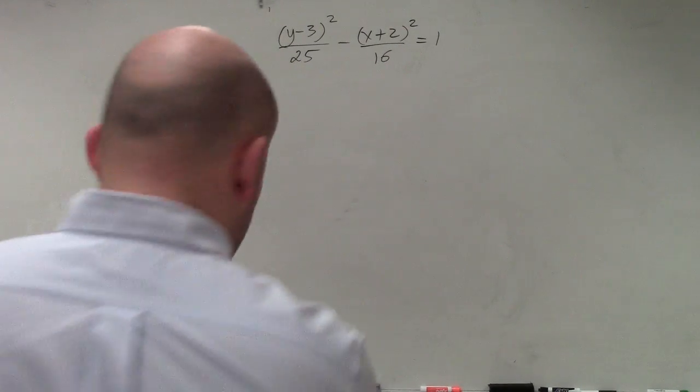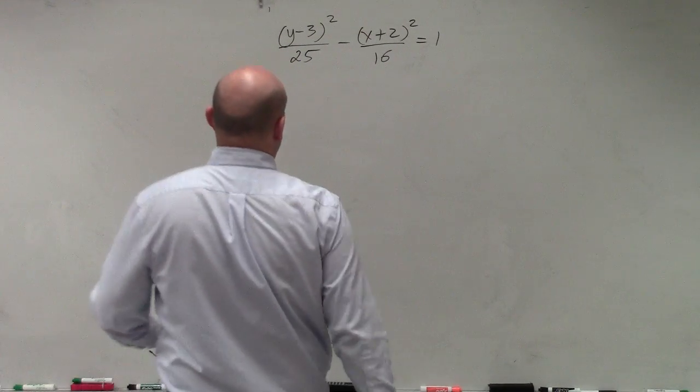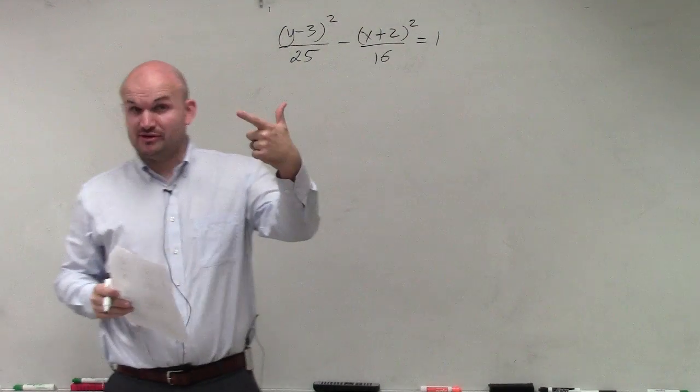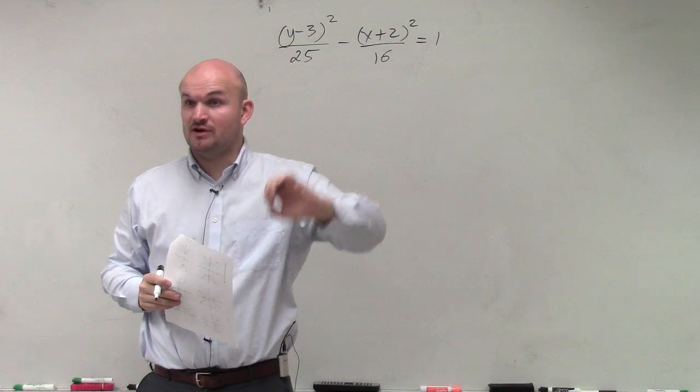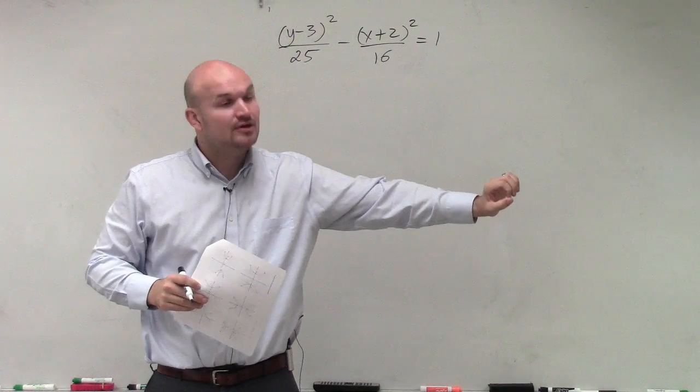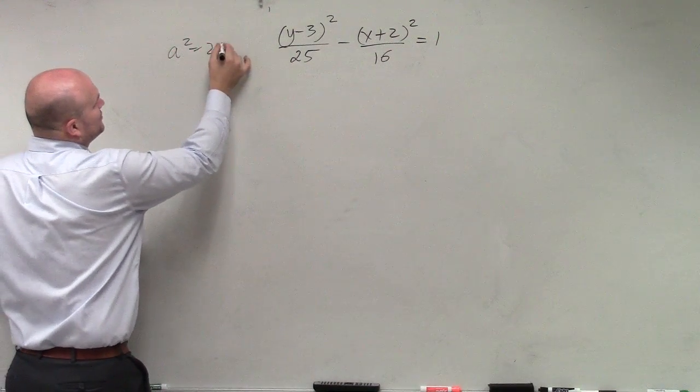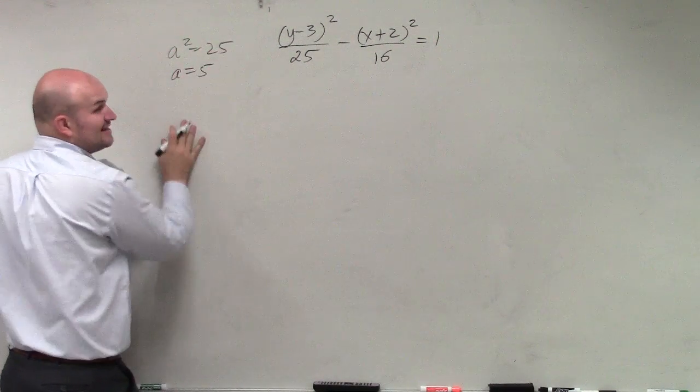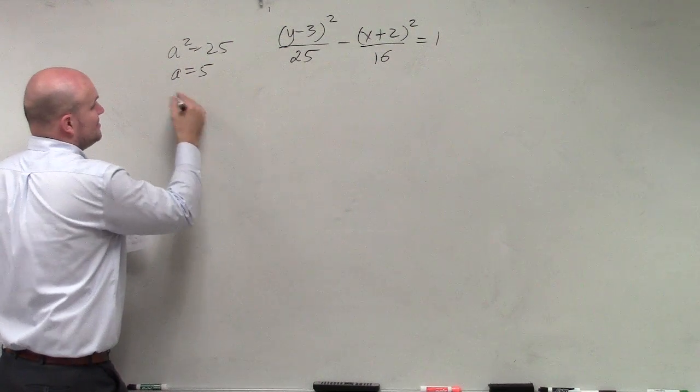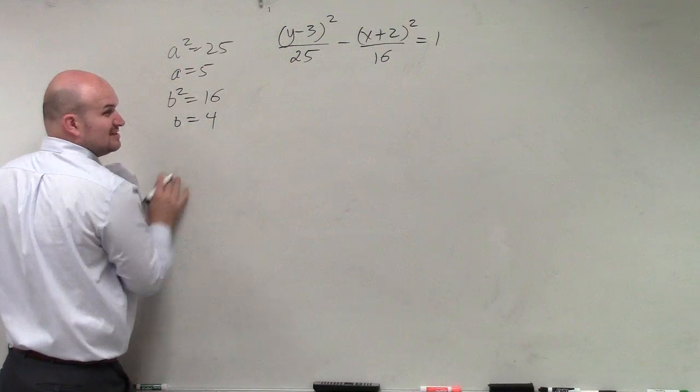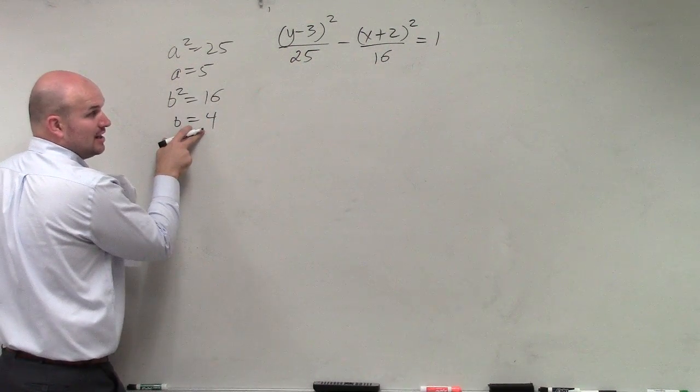First thing I do is recognize this hyperbola. I can identify a² and b² very quickly. Remember, hyperbolas always have a² minus b² form. So a² equals 25, a equals 5 - that's the distance from center to vertices. b² equals 16, b equals 4 - distance from center to co-vertices.